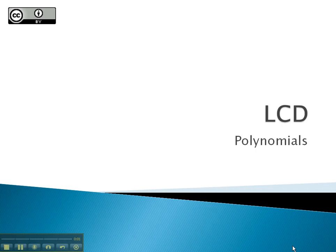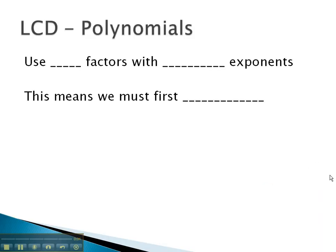In this video, we are going to take a look at how we can find the least common denominator when those denominators are made up of polynomials. We have already said that to find the LCD, we use all factors with the highest exponents. However, in order to use all factors, this means we must first factor each of the polynomials. Let's take a look at some examples where we have to do just that.